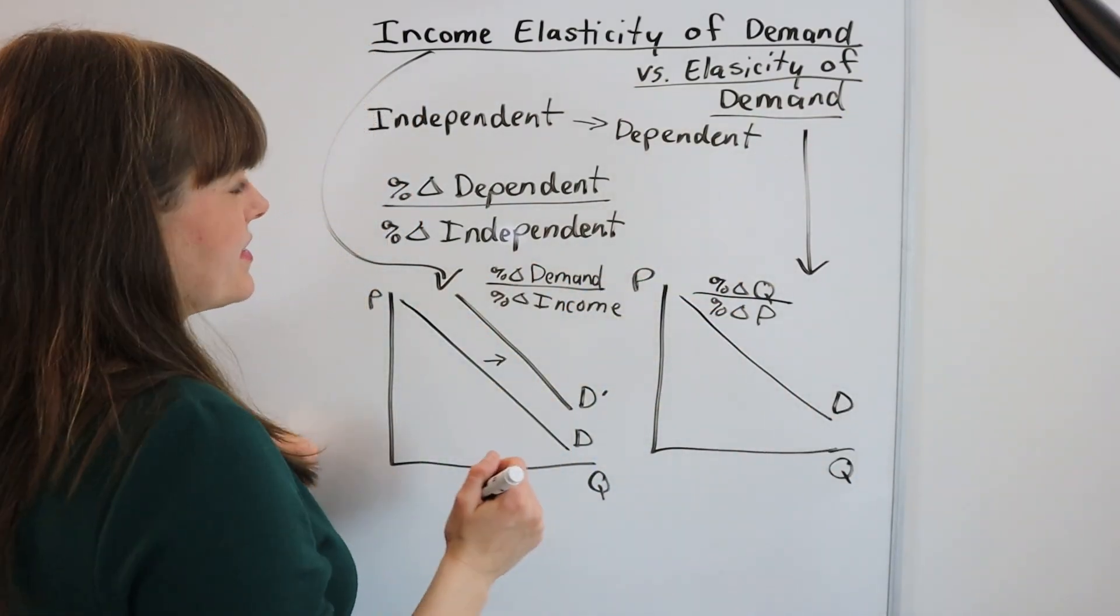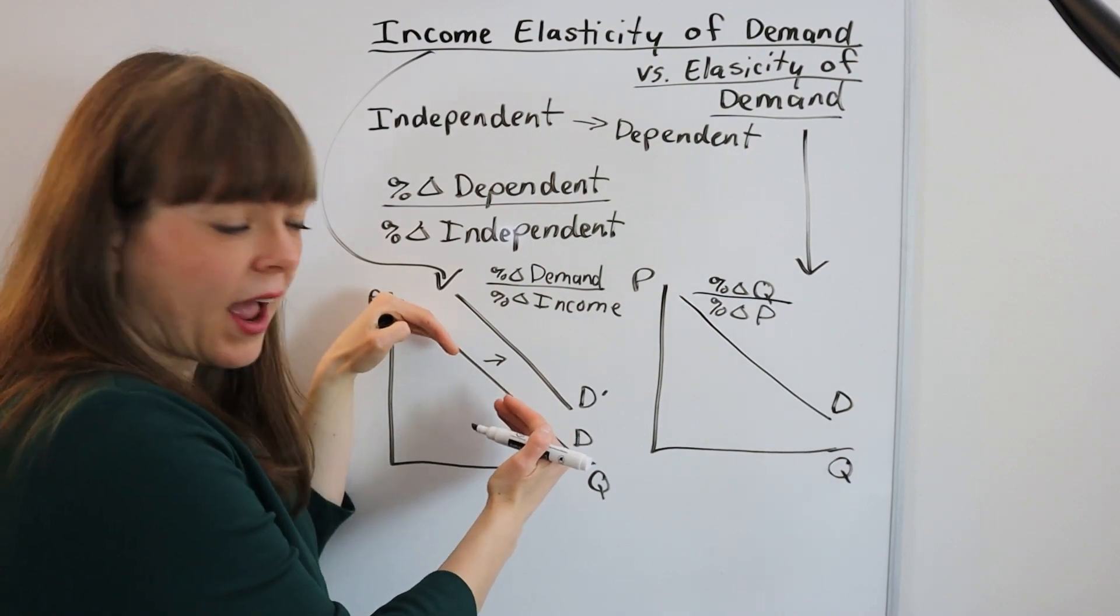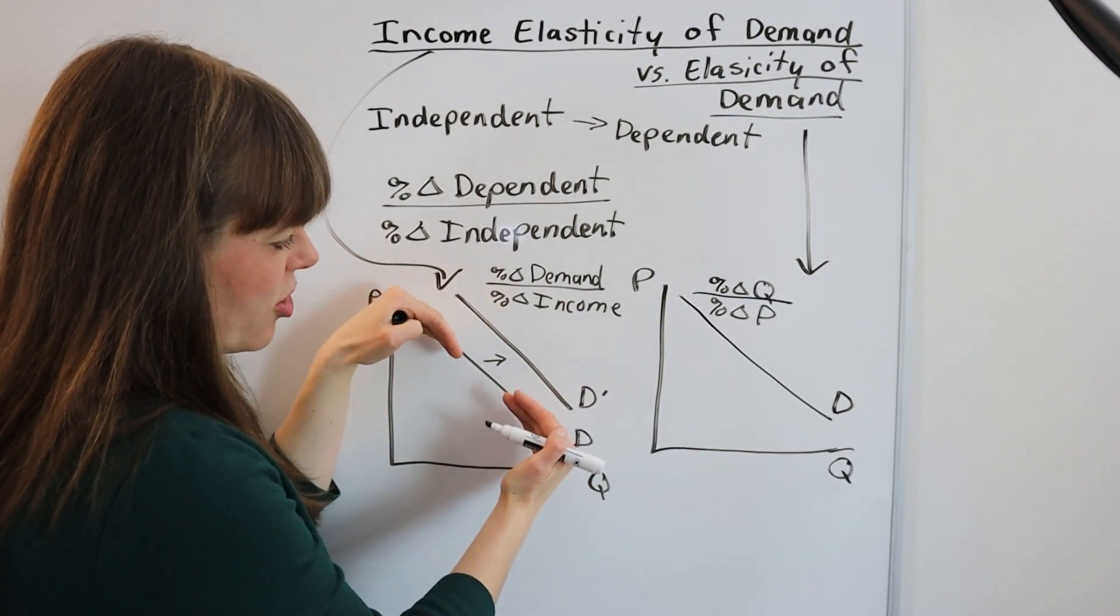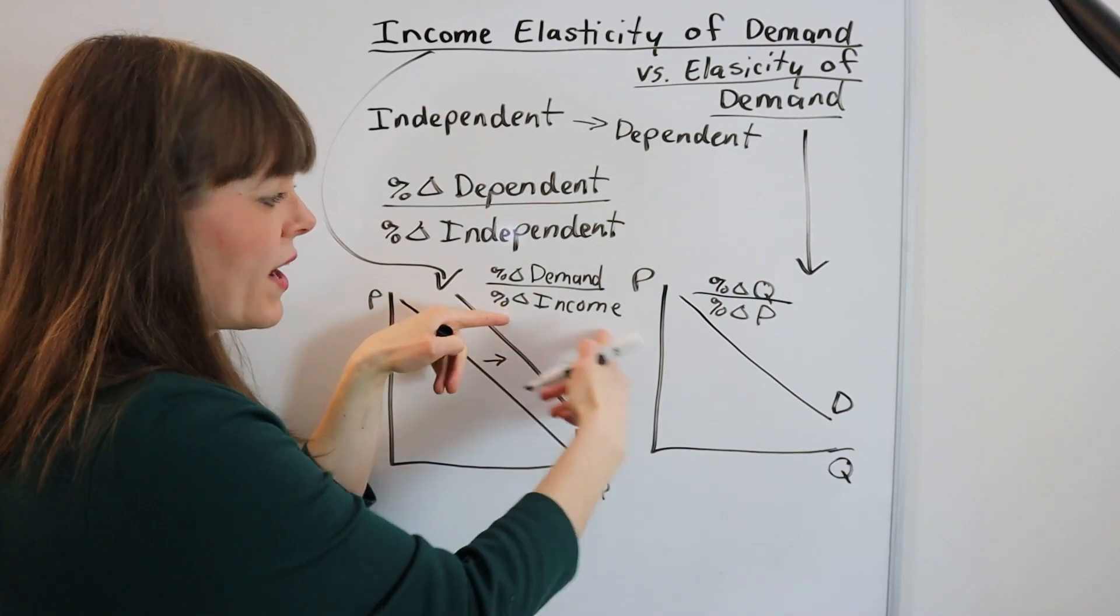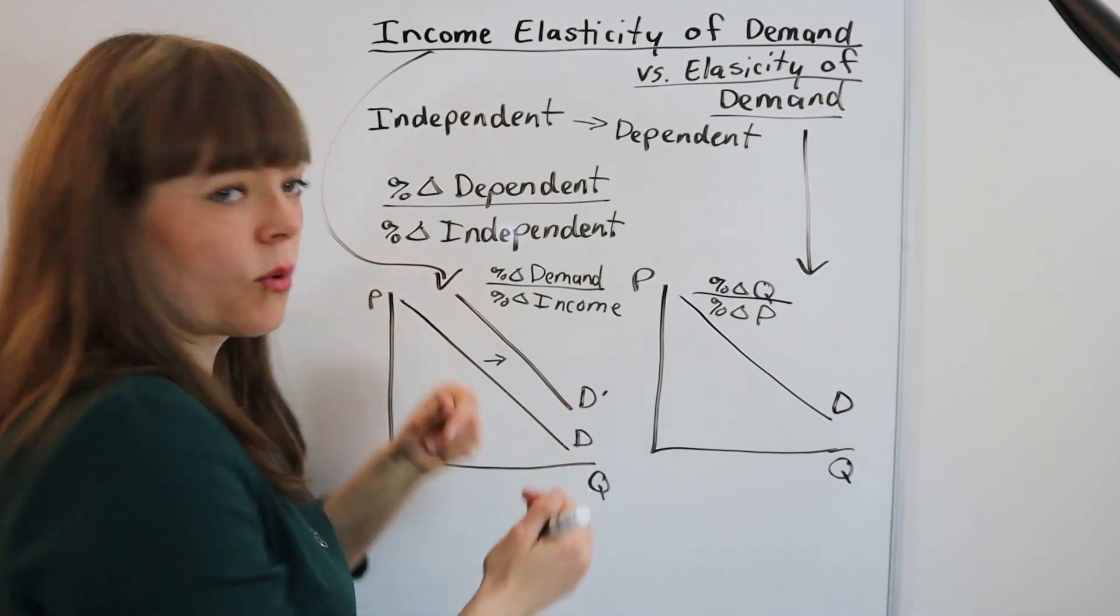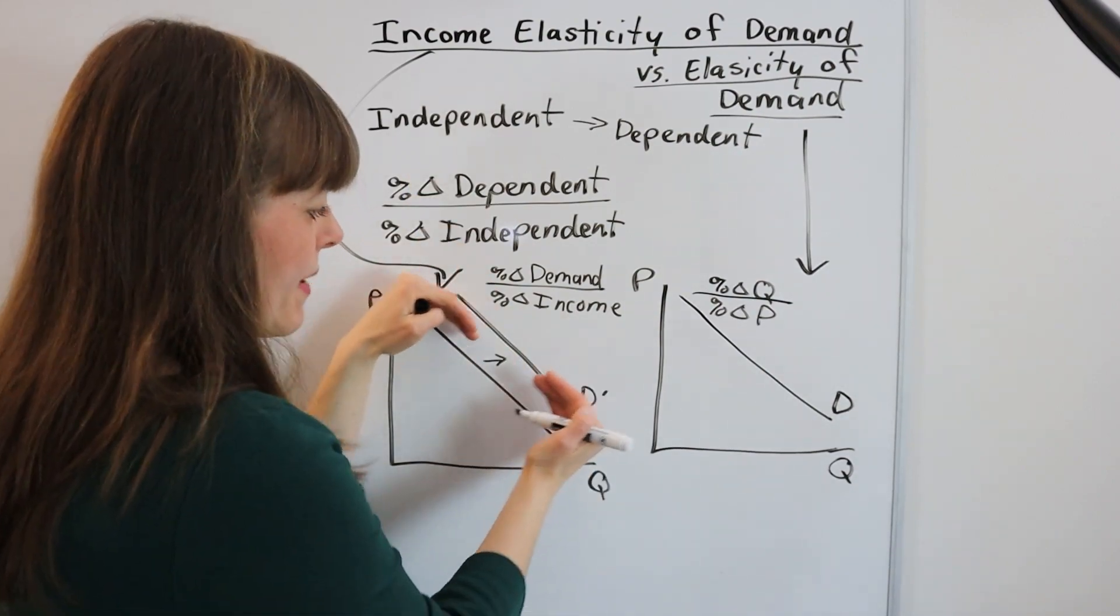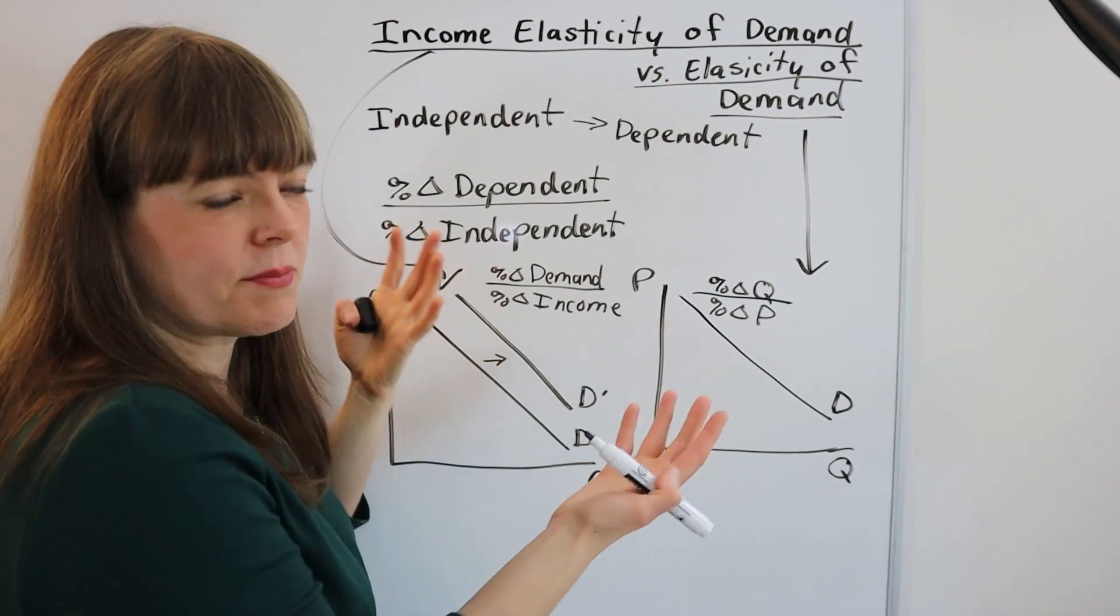Whereas income elasticity of demand is going to capture how much does that demand curve move in its entirety when income changes. Like when income goes up, do you demand more of a product? That would be a normal good.